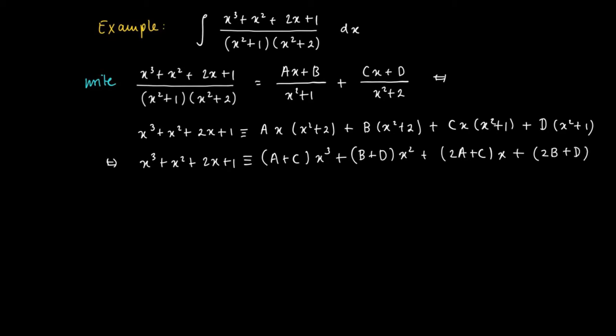Check it yourself that this is actually correct. So now we get again a system of linear equations since A plus C should be equal to 1. So A plus C times x to the power of 3 should be equal to x to the power of 3. So we get A plus C equals 1.